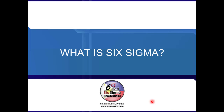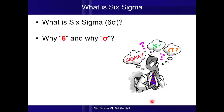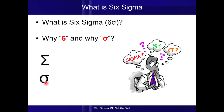Now what is Six Sigma? Why six and why sigma? Six is the number after five and the number before seven. And sigma is a Greek letter. The uppercase Greek letter sigma looks like this, and the lowercase sigma letter looks like this.